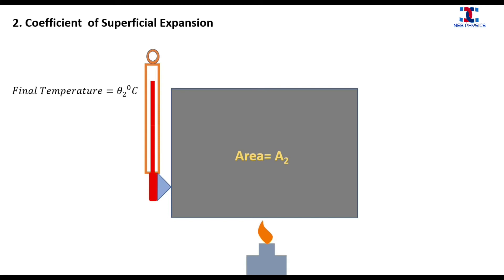Now, change in area is given by A₂ minus A₁, that is equal to ΔA, and change in temperature is given by θ₂ minus θ₁.